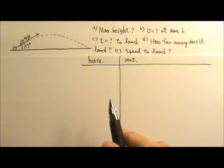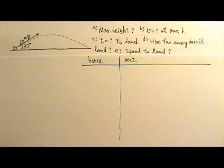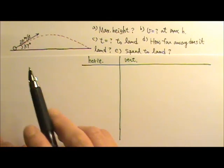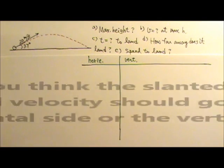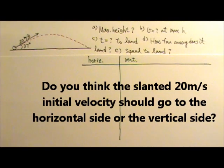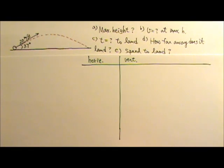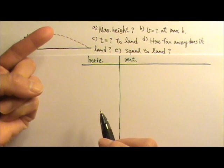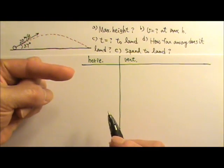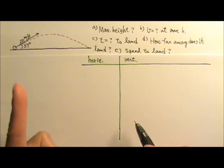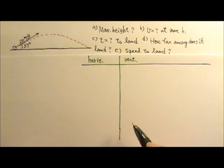I'm making this chart to separate the horizontal and the vertical sides. Now let's list the variables. The initial velocity is 20 meters per second. Do you think that should go to the horizontal side or the vertical side? Actually, neither. This slanted 20 meters per second velocity sort of goes up and sort of goes to the right. So it has a horizontal and a vertical component — that's what we call them, components.